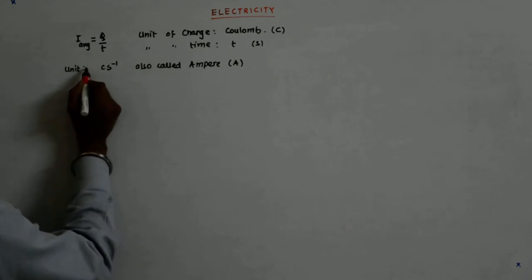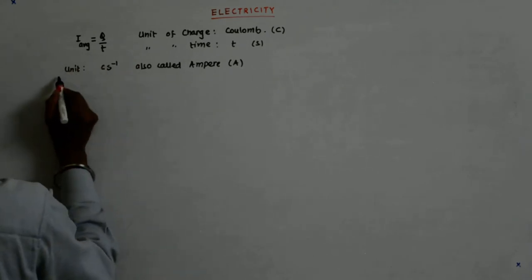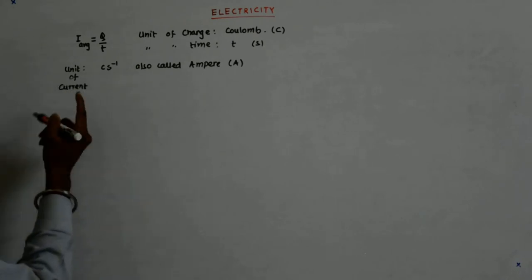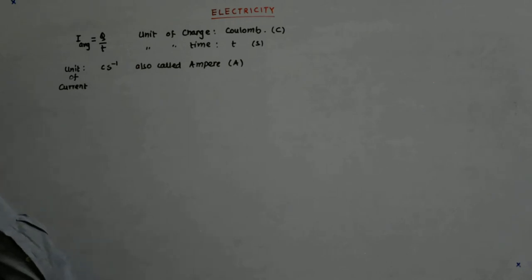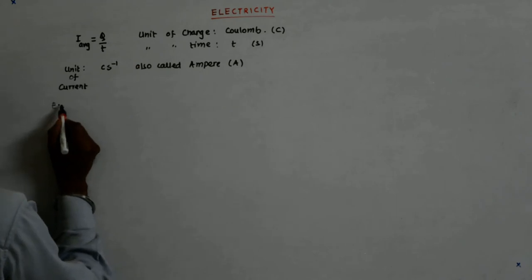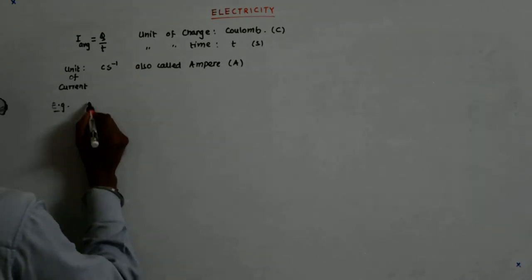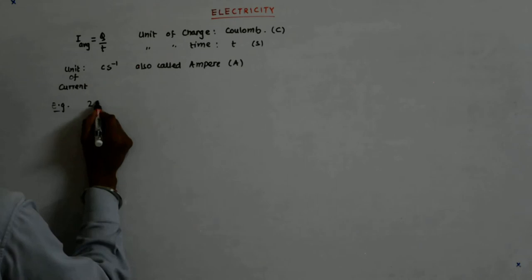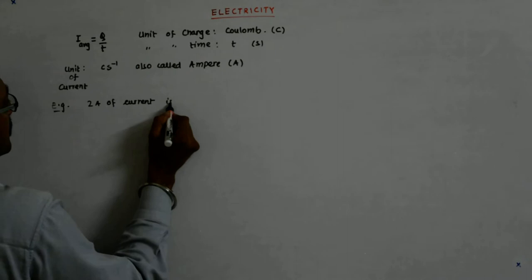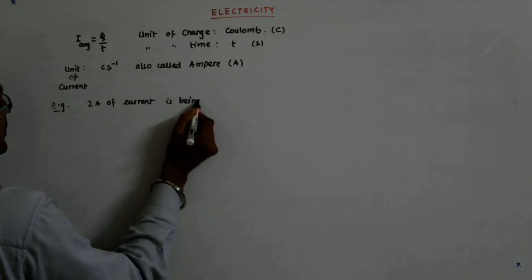So unit of current becomes this. Fine, and we had also seen what happens if I'm dealing with maybe a small current. Now suppose I have an example where I say that, say 2 ampere of current is being drawn by a circuit.